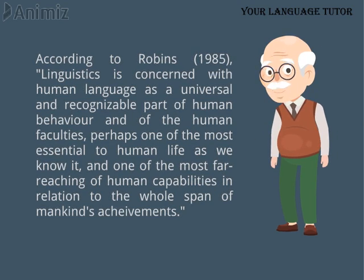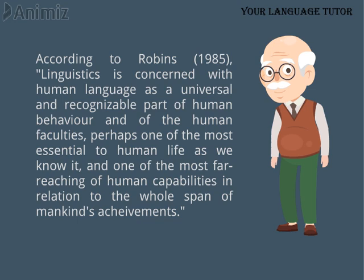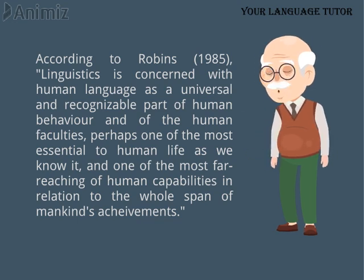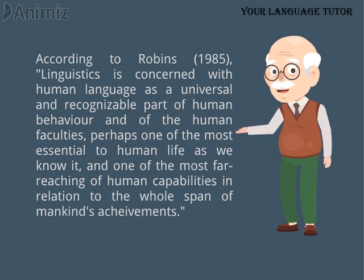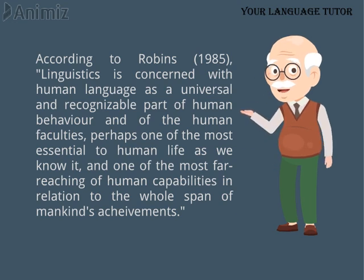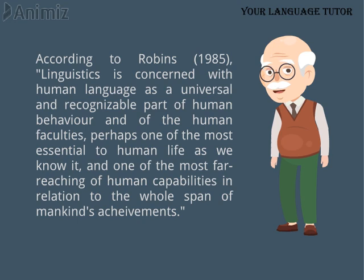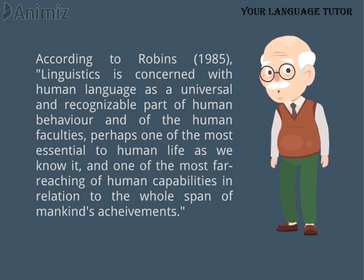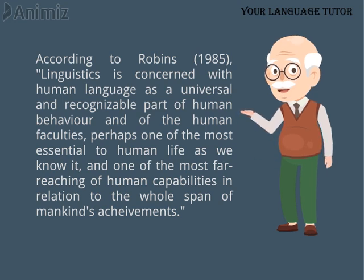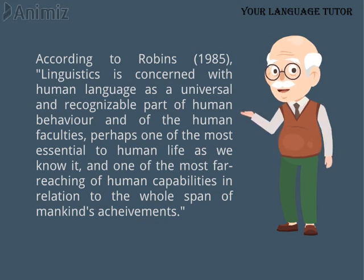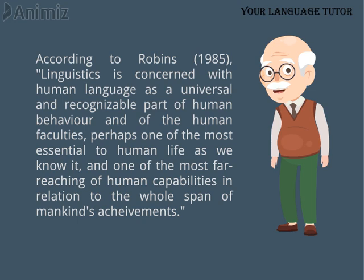Dosto, Robins yeh kehna chahte hain ke Linguistics ka taluq human language se hai, aur jo human language hai, woh universal aur ek recognizable part of human behavior hai. Recognizable hum usay kehte hain jise hum insaan ki behavior se bilkul easily judge kar sakein — hume pata hota hai ke language kya hai. Universal hum usay kehte hain jo aam ho, har jagah par ho. Yahan universal se yeh murad hai ke jahan par human life hoti hai, wahan par language payi jaati hai. Insaani zindagi ki jitni bhi essential necessities hain, language un mein se ek hai — aur shayad aaj tak insaaniyat ki jitni bhi achievements hain, un mein sabse behtareen achievement uski language hi hai.